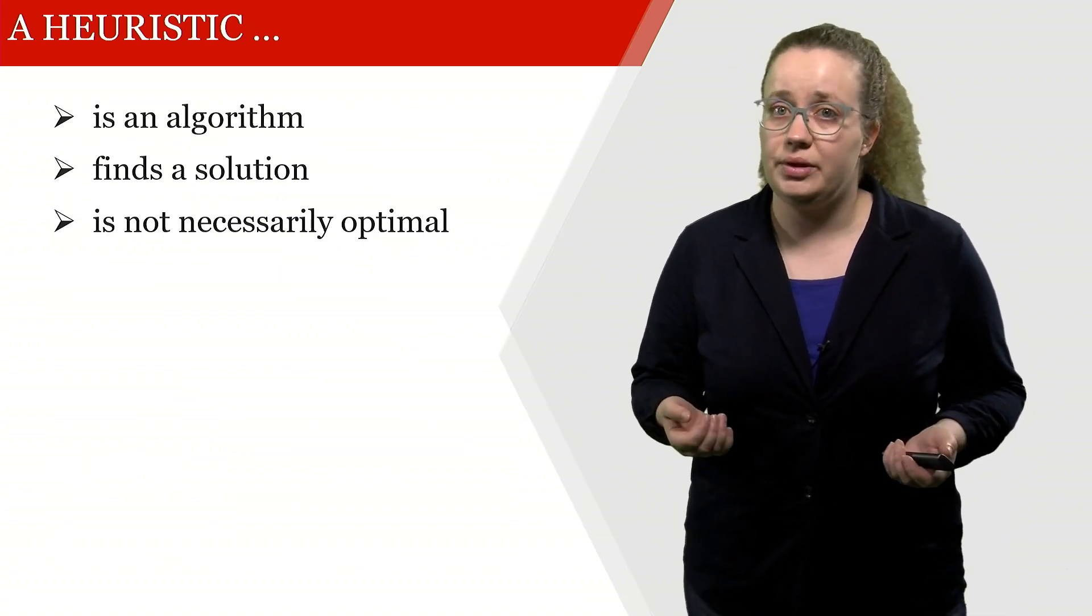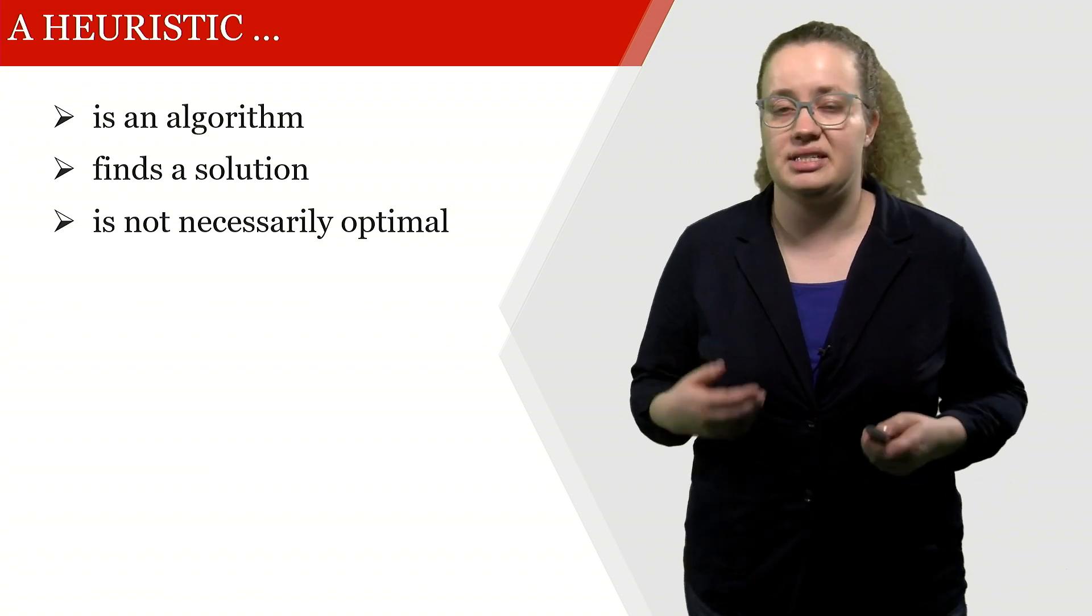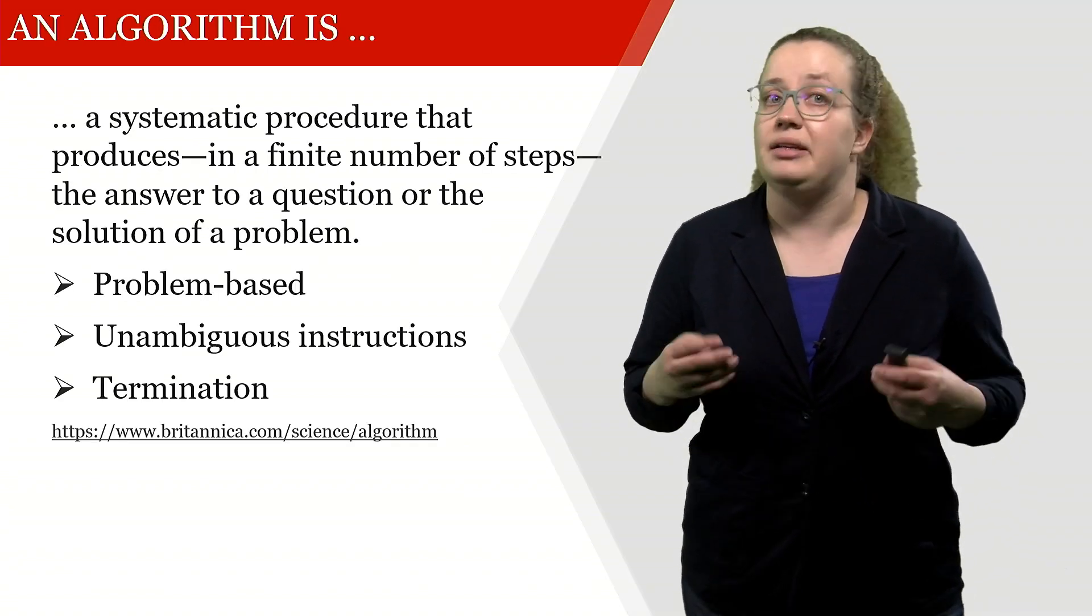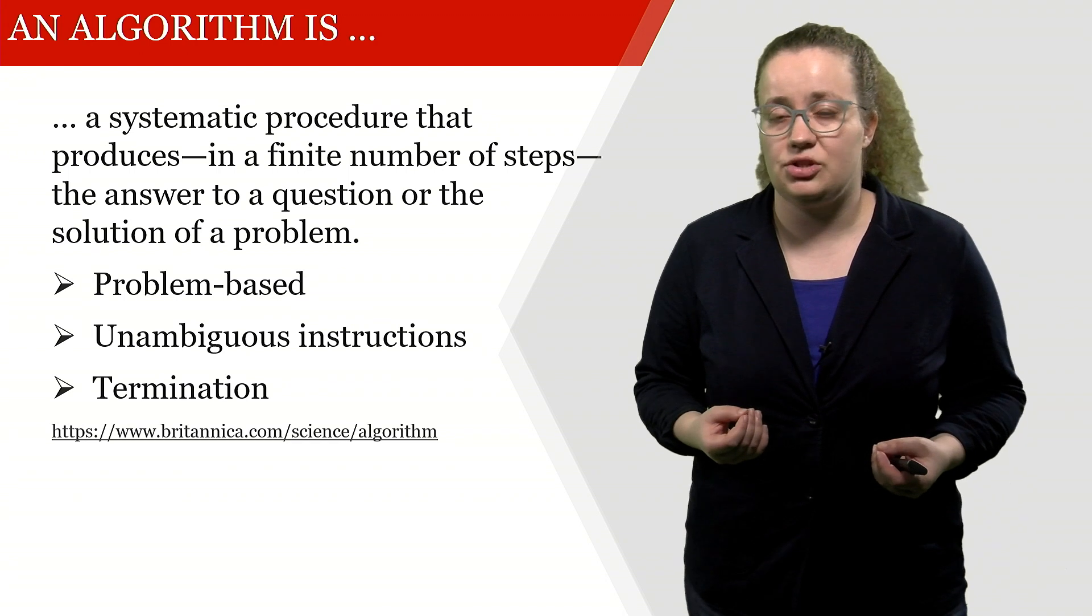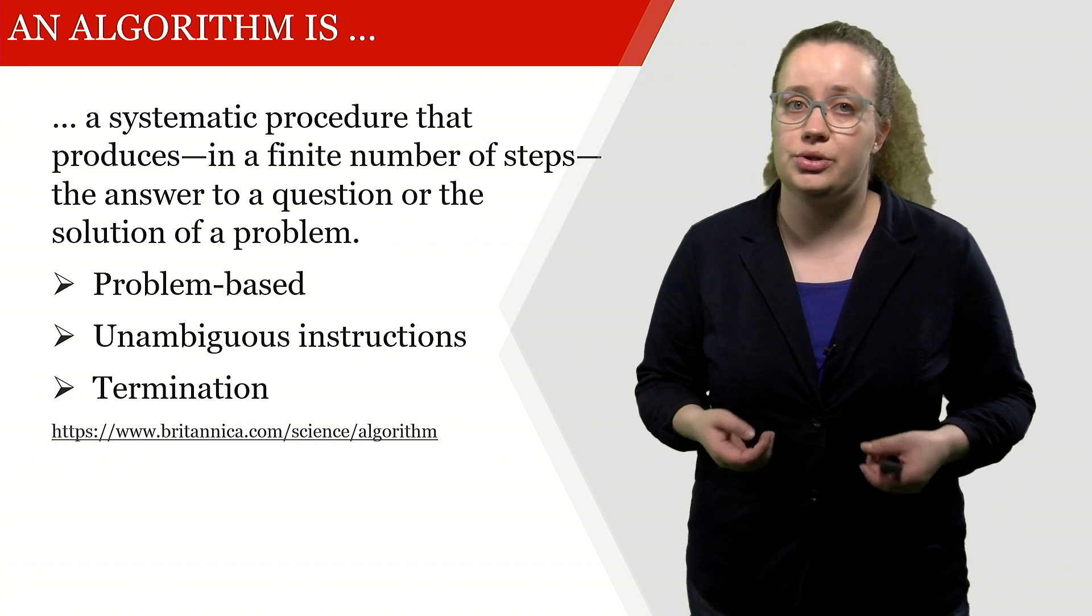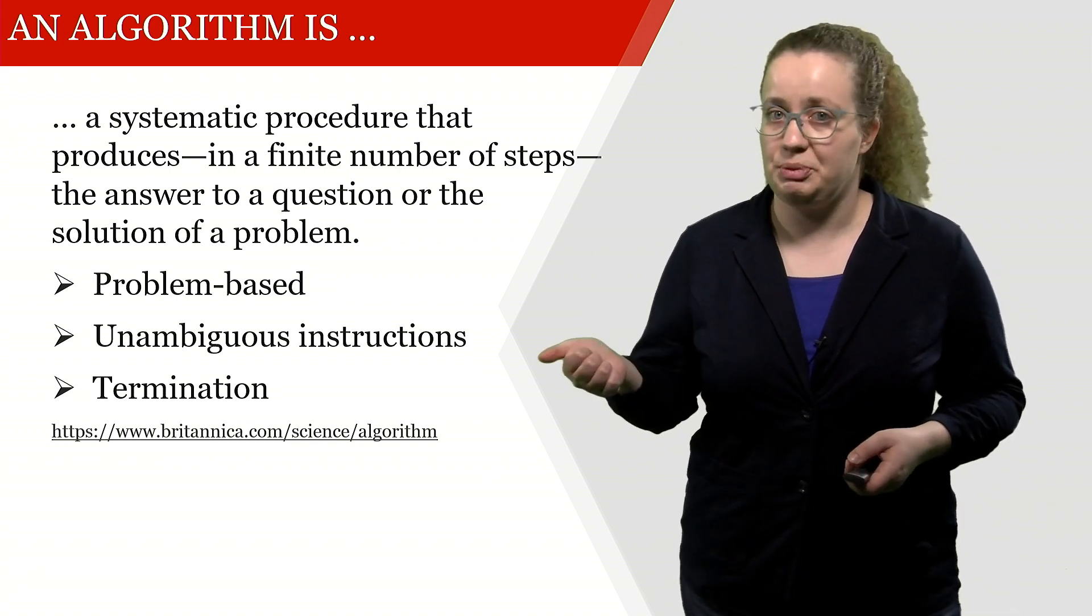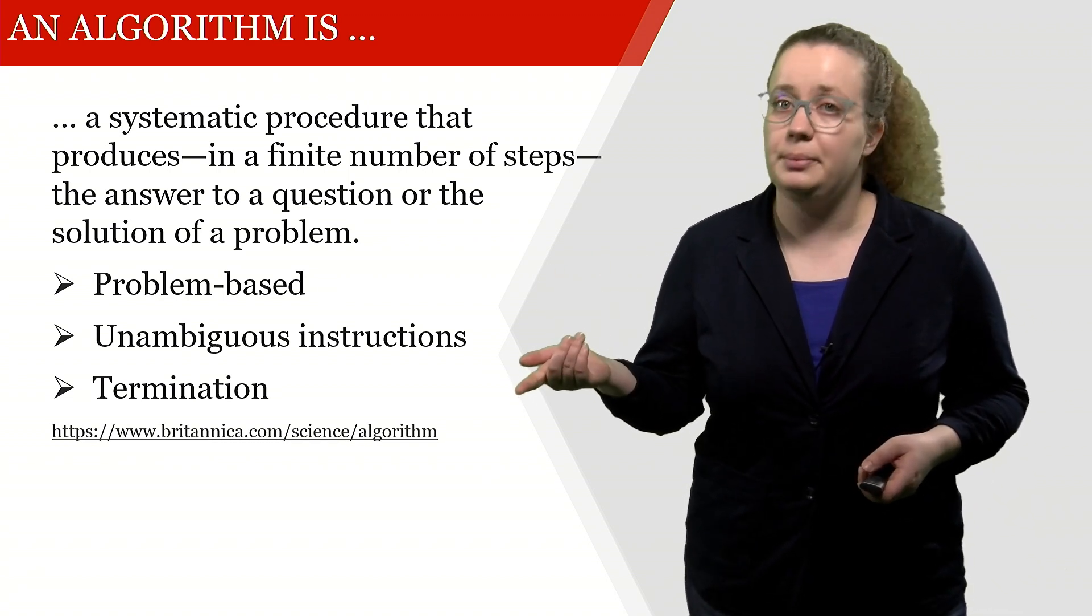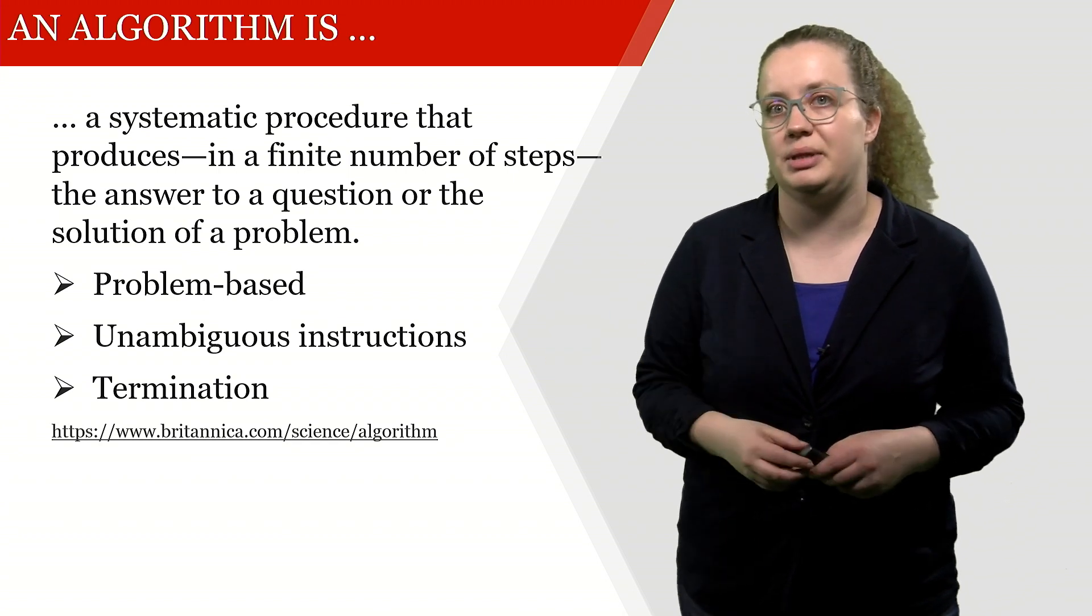A heuristic is an algorithm that finds a solution but it's not necessarily optimal. An algorithm is a systematic procedure that in a finite number of steps provides the answer to a question or the solution to a problem, which means it has to be problem-based, it needs to be unambiguous, and it needs to have a termination criterion.